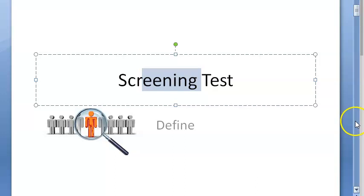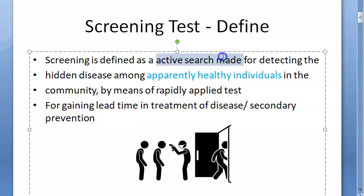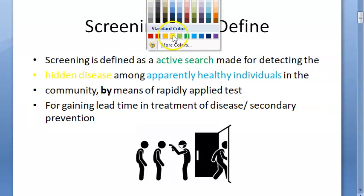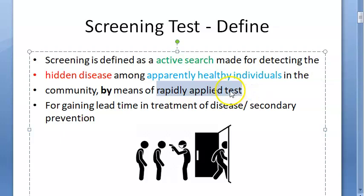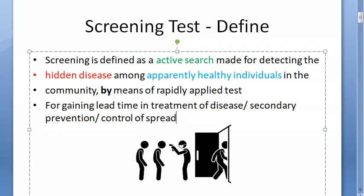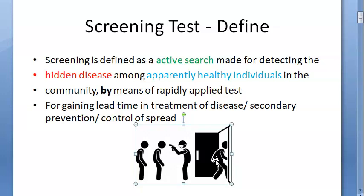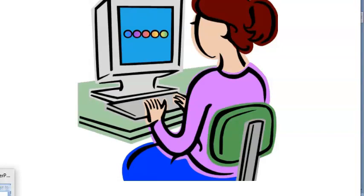In this video, let us look at what a screening test is. Basically, the definition: a screening test is an active search for detecting the hidden disease among apparently healthy individuals in the community, by means of rapidly applied tests. This is done for gaining lead time in the treatment of disease, secondary prevention, and also for control of spread — for example, checking whether a person has COVID to prevent the spread.